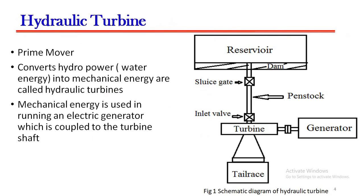Now let's discuss about hydraulic turbines. A hydraulic turbine is a prime mover that converts hydropower into mechanical energy. The mechanical energy that is converted will be used in running an electric generator which is coupled to the turbine shaft. On the right hand side, you can see a schematic diagram of a hydraulic turbine.